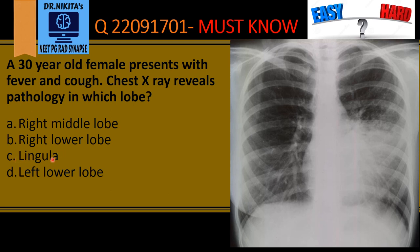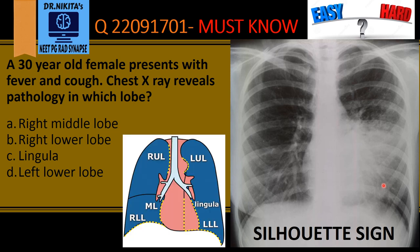We now have to select between options C and D, and this is done based on the sign called the silhouette sign. The silhouette sign says that if there is a pathology which obscures the left heart border, then the pathology is in the lingula.